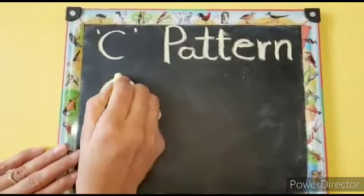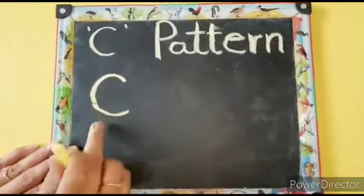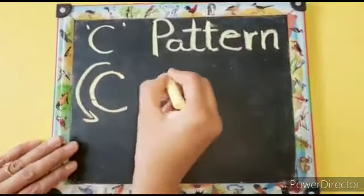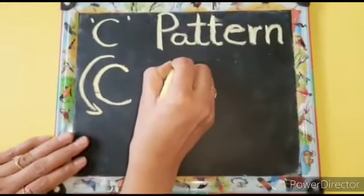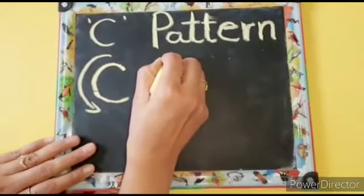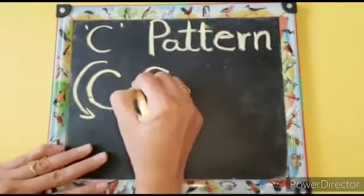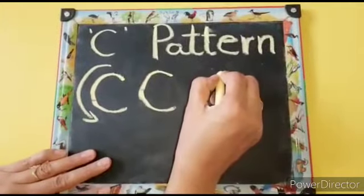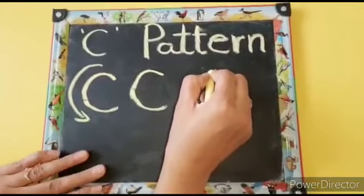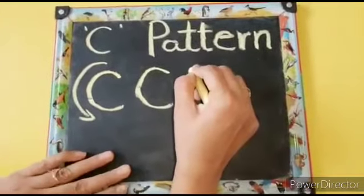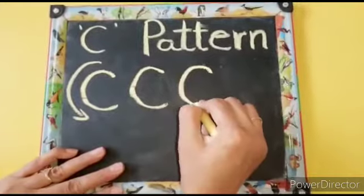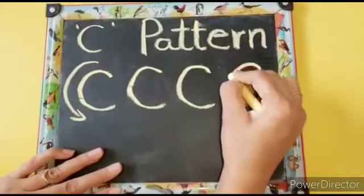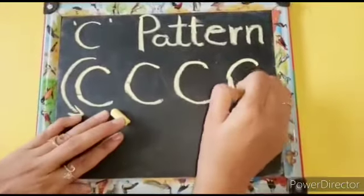We are giving a curve to the left side, so it is also called curve to left. Once again, keep your pencil on the slate and write a curve to left. Come down and complete the curve. This is C pattern, or curve to the left.